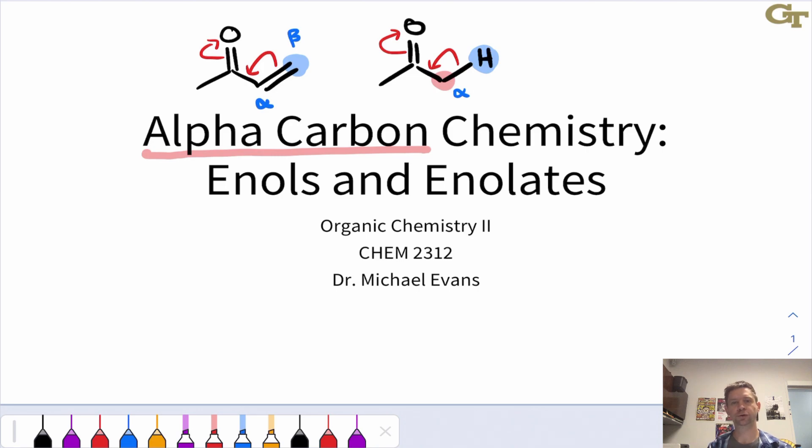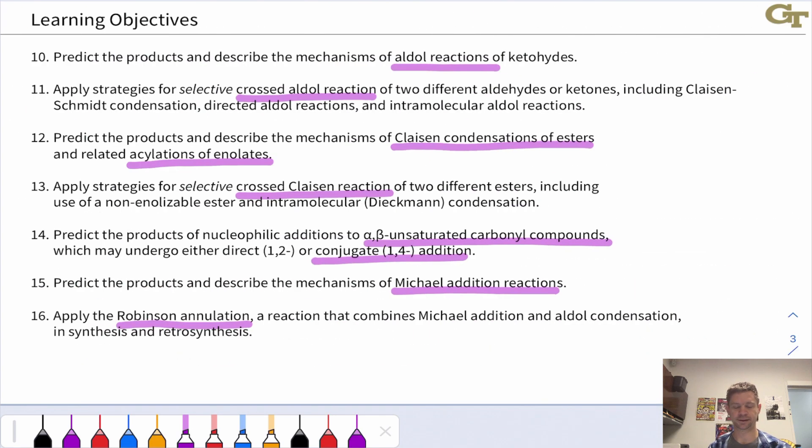And that opens the door to some new reactions, new synthetic possibilities, that kind of thing. And then finally, the Robinson annulation is a beautiful reaction that combines aldol type and Michael type reactivity in what is ultimately a four plus two cyclo addition that occurs in a stepwise fashion, as opposed to the concerted Diels-Alder reaction.